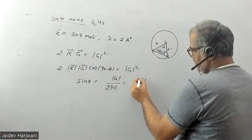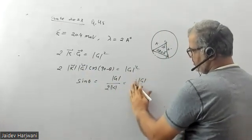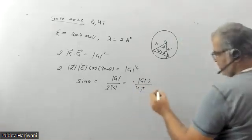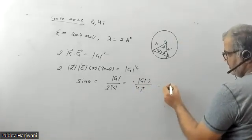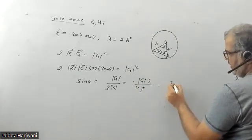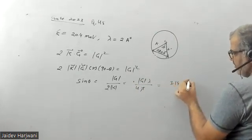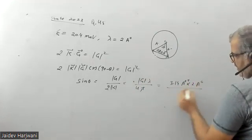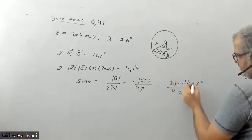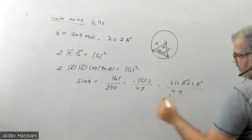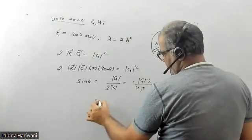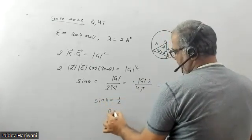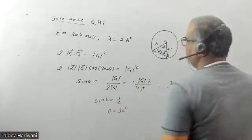In the question, G is given as 3.14 angstrom inverse, λ is 2 angstrom, and this is 4π. Pi cancels, 2 cancels, so sine theta comes to half. Therefore, theta value will be 30 degrees.